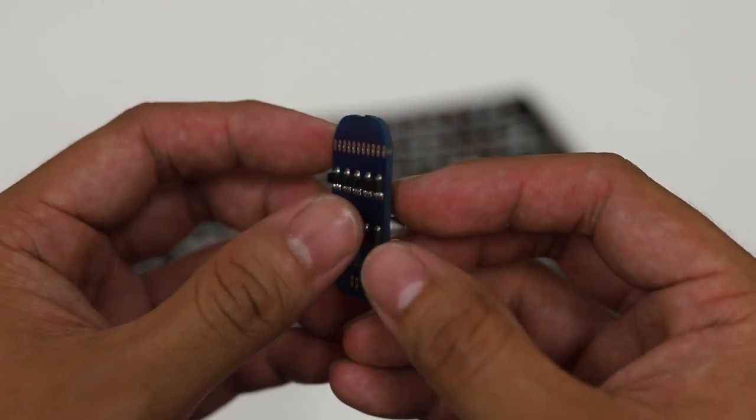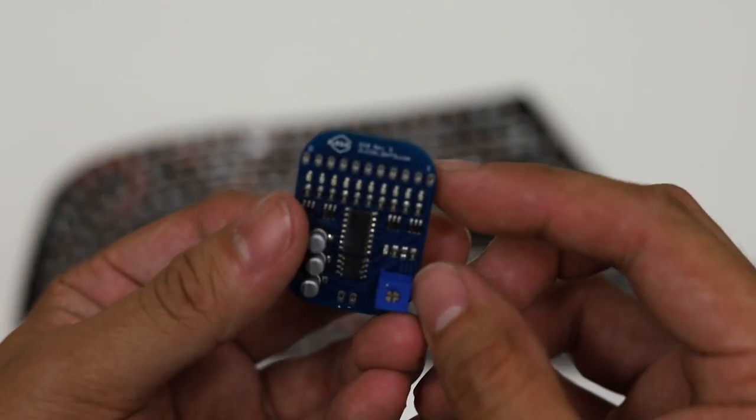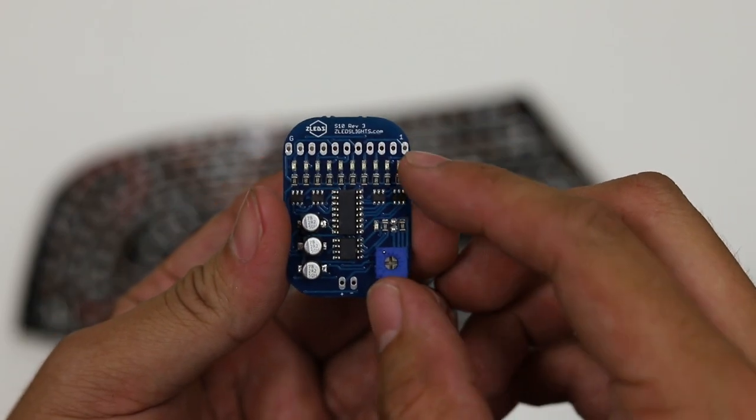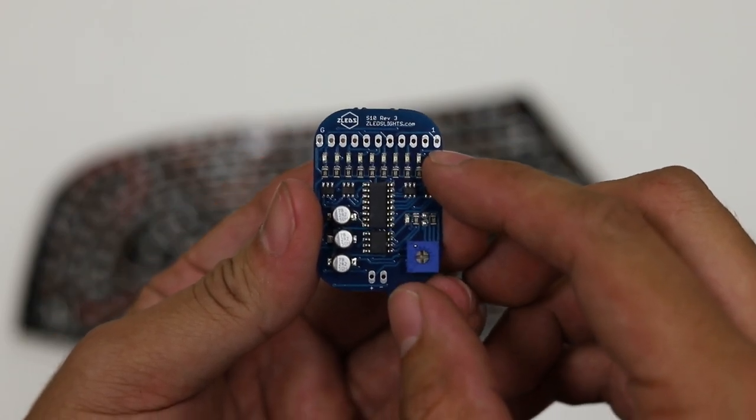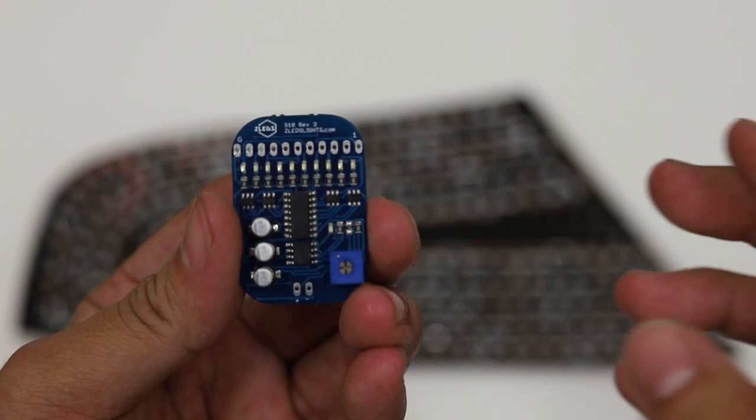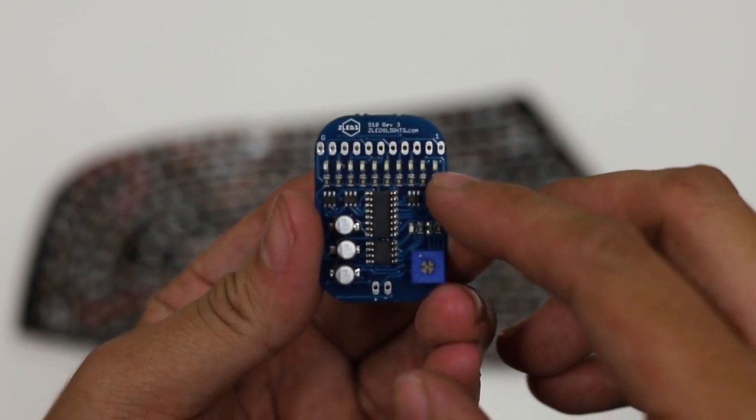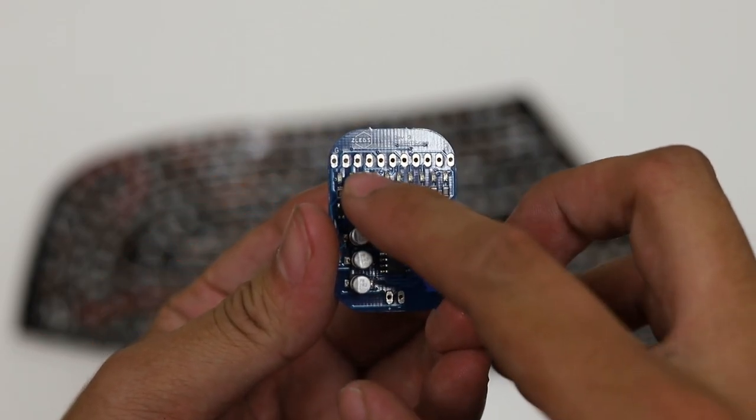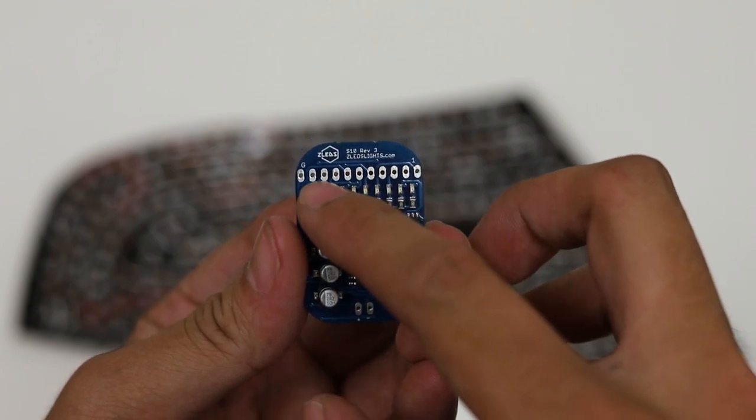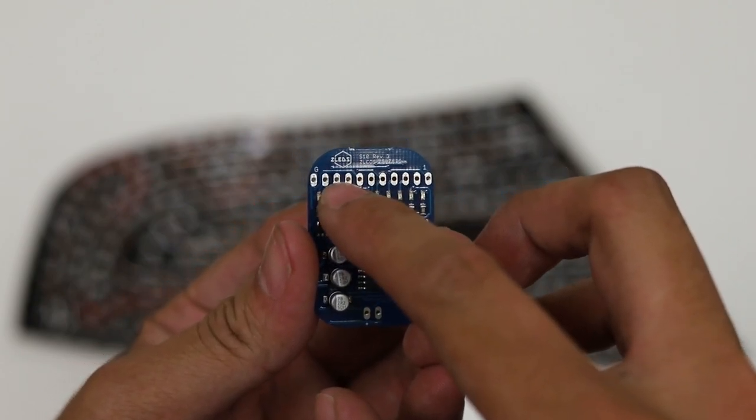I will now go over how to wire this to your tail light. As you can see, this is a 10-pixel module, meaning we can have 10 pixels in our sequential turn signal. From right to left, that's where your 1 to 10 are, so it goes from 1, 2, 3, all the way to 10.